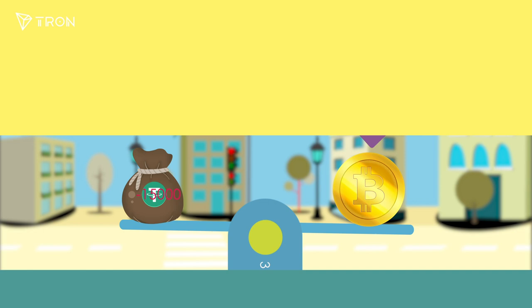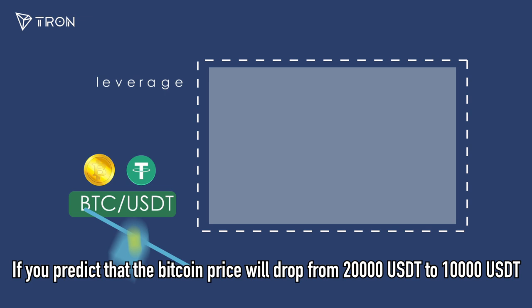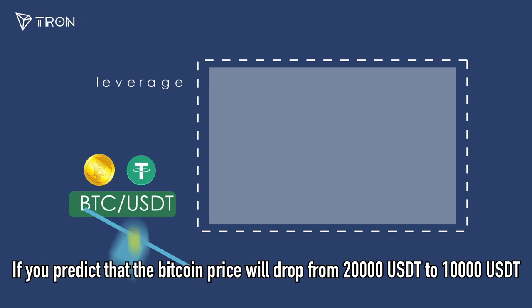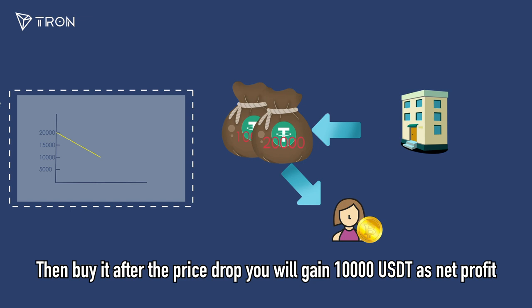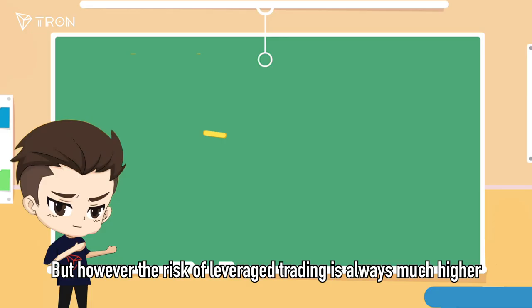Going short is another way of leveraged trading. If you predict that the bitcoin price will drop from 20,000 USDT to 10,000 USDT, with three times leverage you can loan one bitcoin from the platform. Then buy it back after the price drop, and you will gain 10,000 USDT as net profit.